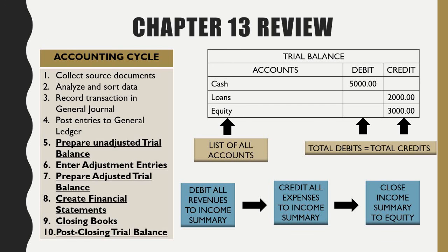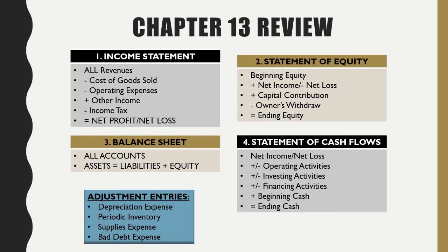Let's do a quick review of the last five steps of the accounting cycle. For the trial balance: list all accounts from the ledger and test if total debits equal total credits. For closing entries: debit all revenues, credit all expenses, then close income summary to equity. Here are the four financial statements and how to complete them, along with a reminder of what adjustment entries are.